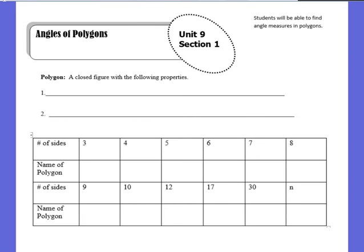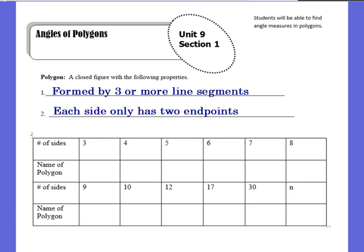So what exactly is a polygon? A polygon is a closed figure that has the following properties: it's formed by three or more line segments, and each side has only two endpoints. So any sort of closed figure makes a polygon.